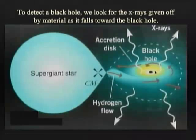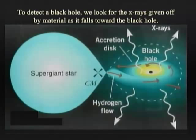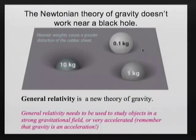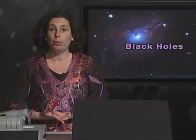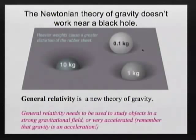When dealing with black holes and objects of such enormous density, Newtonian theory of gravity doesn't work anymore. In that case, we need to use the theory of general relativity, which is a new theory of gravity proposed by Albert Einstein. General relativity must be used every time you're dealing with an object that is either very near a strong gravitational field or is being very highly accelerated — that is, its velocity is changing a lot.